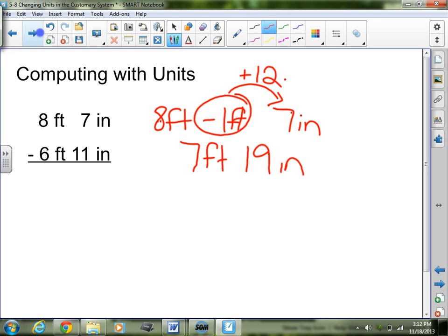It changes from 1 foot to inches. So I'm left with 7 feet because I took 1 away from the 8. By bringing it over, I changed it into inches and 7 plus 12 is 19. So I now have 7 feet and 19 inches minus 6 feet and 11 inches. Now I can subtract because 19 is bigger than 11. 19 minus 11 is 8, so I have 8 inches. 7 minus 6 is 1. So I'm left with 1 foot 8 inches.